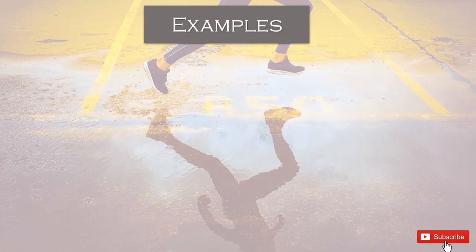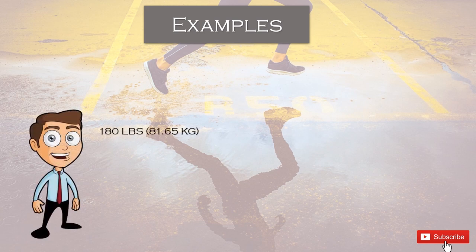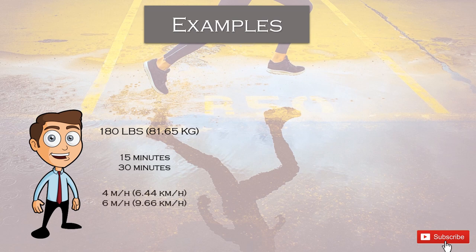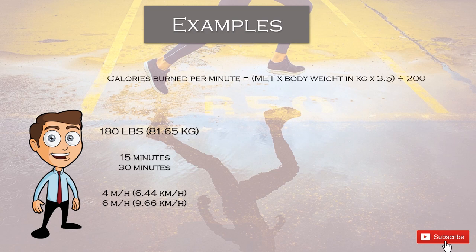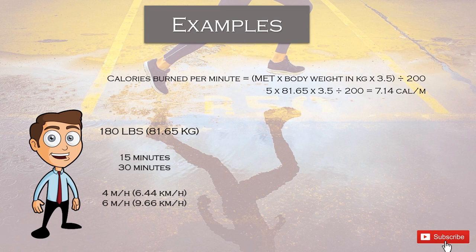Let's look at an example using myself as a case. I'm currently 180 pounds or 81.65 kilograms. We are going to calculate how many calories I'm going to burn if I run for 15 minutes or 30 minutes at two different speeds: 4 and 6 miles per hour. First, we need to start with how many calories I burn per minute. For 4 miles per hour, the MET equivalency is 5, so the formula is: 5 times 81.65 times 3.5 divided by 200.